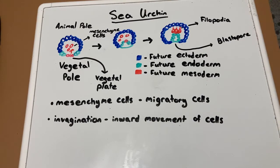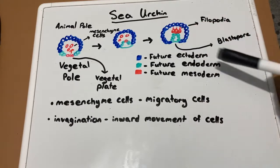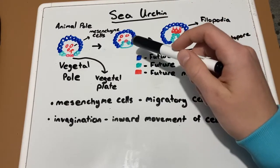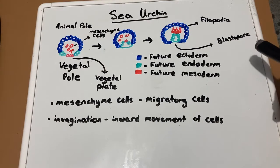After this, the cells of the vegetal pole curve inward, as seen in the second picture. These green cells, which are the future endoderm cells, begin to curve inward. This curve is known as invagination. The cells connected to the invagination begin to form the digestive tube of the gastrula, known as the archenteron, which is formed by endoderm cells. The first opening of the archenteron is known as the blastopore.